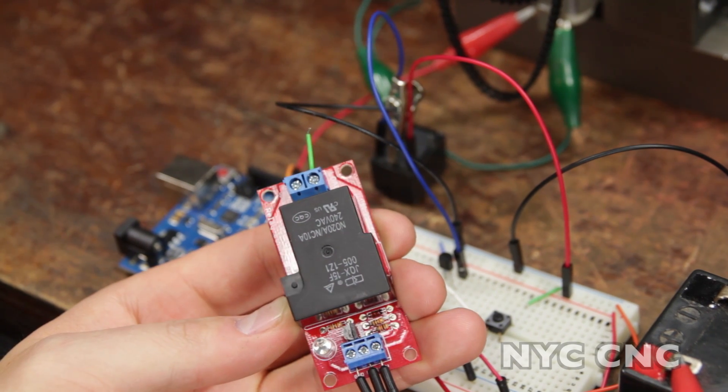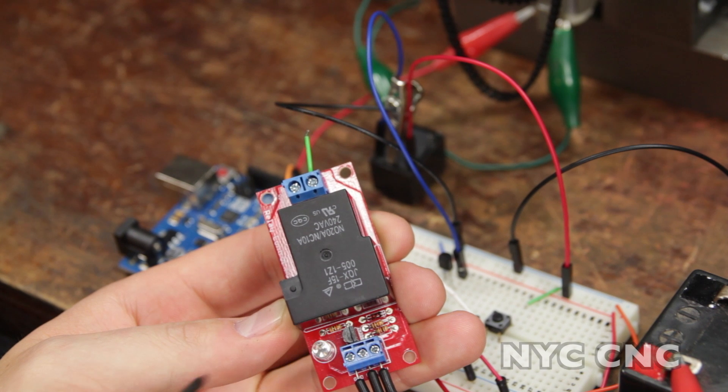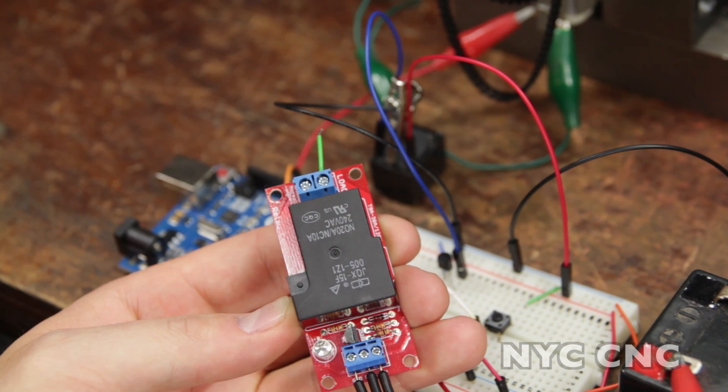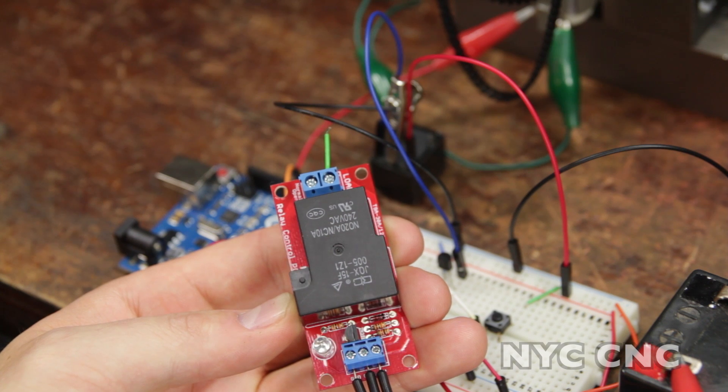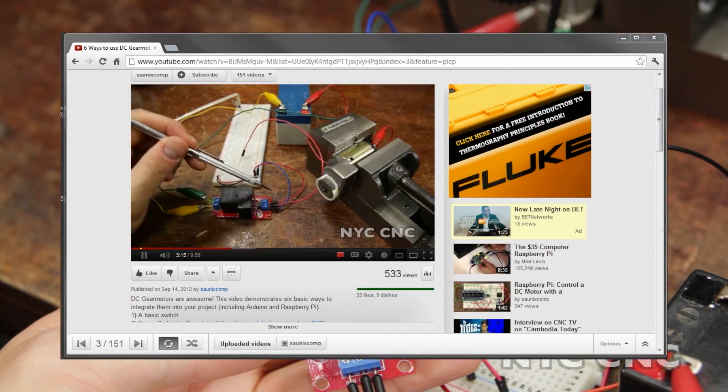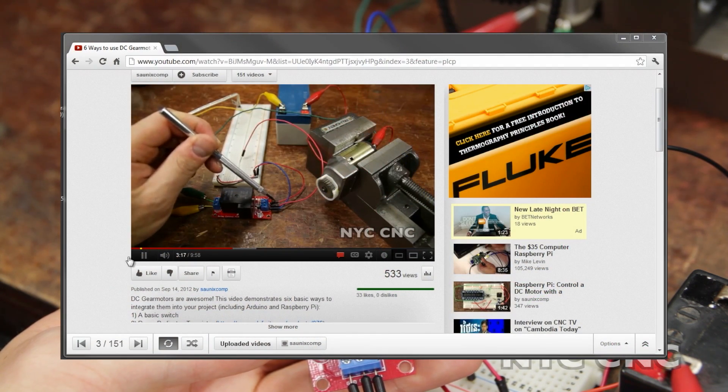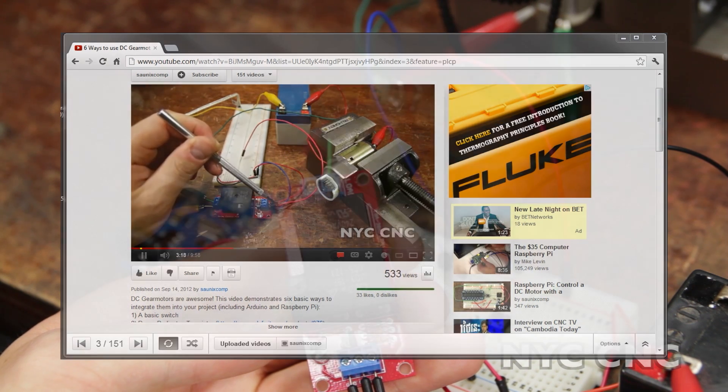What's great about it is it includes the transistor, diodes, and an LED along with some nice terminal headers which make it super convenient to use. For more information on this check out my video six ways to work with DC gear motors where I cover this in more detail.